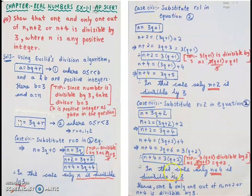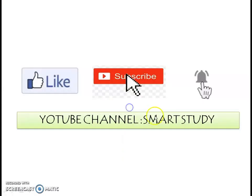In all three cases, exactly one of n, n + 2, or n + 4 is divisible by 3: in case 1 it is n, in case 2 it is n + 2, and in case 3 it is n + 4. Therefore, 1 and only 1 out of n, n + 2, or n + 4 is divisible by 3. Like, subscribe, and comment if you have any doubts.